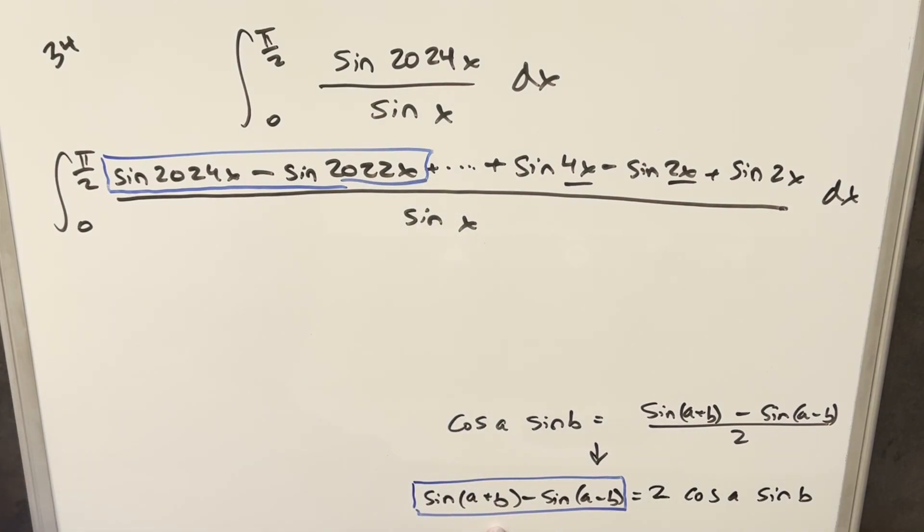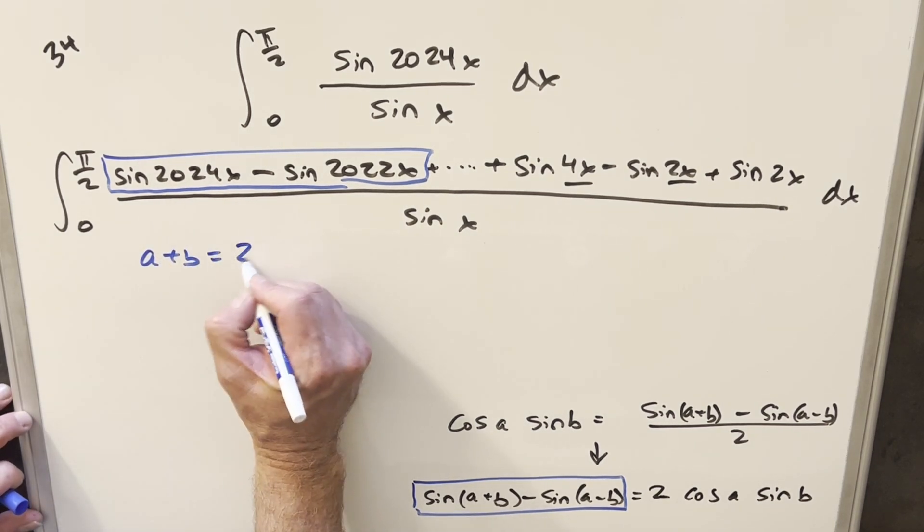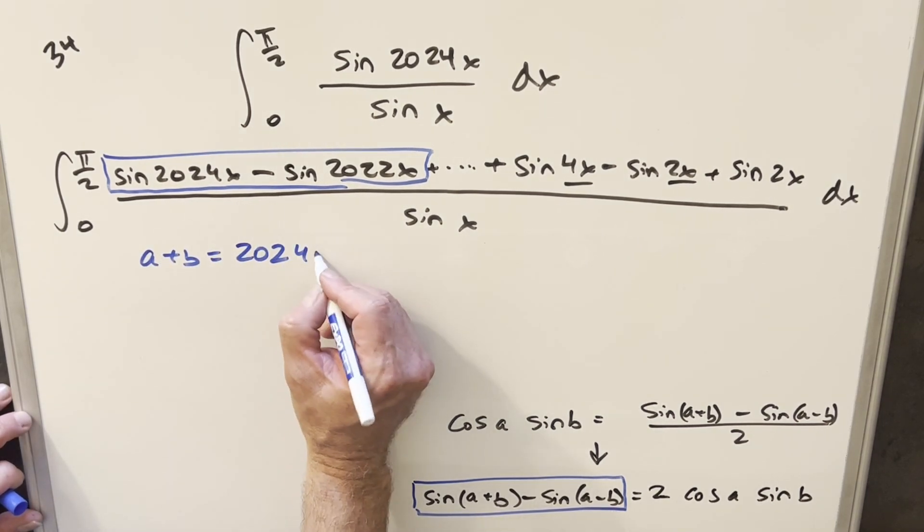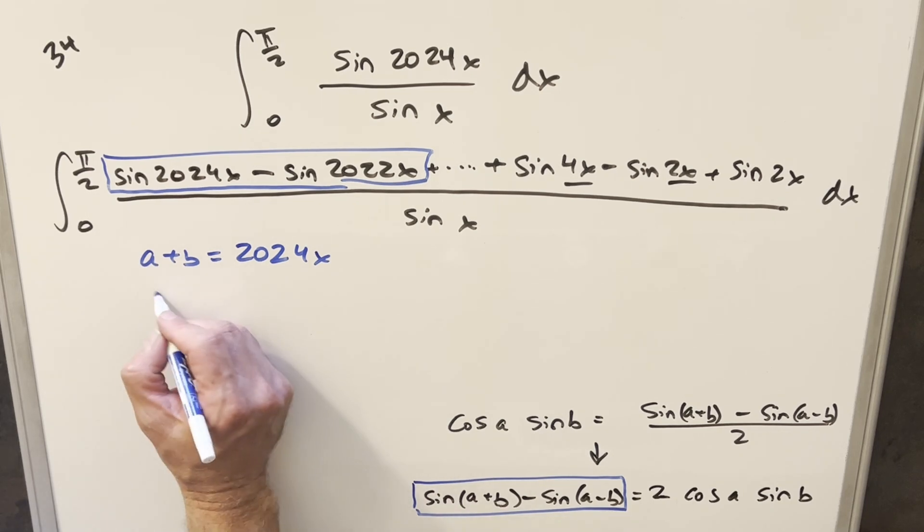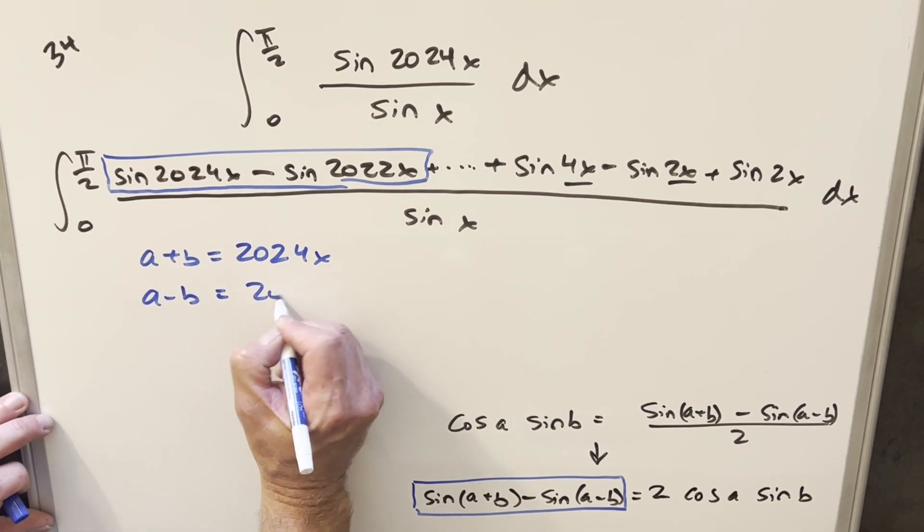Subtracting two sine functions with different angles. And then like for this, what we're saying is for our a plus b, we're saying a plus b here is going to be 2024x. And then our a minus b is going to be 2022x.